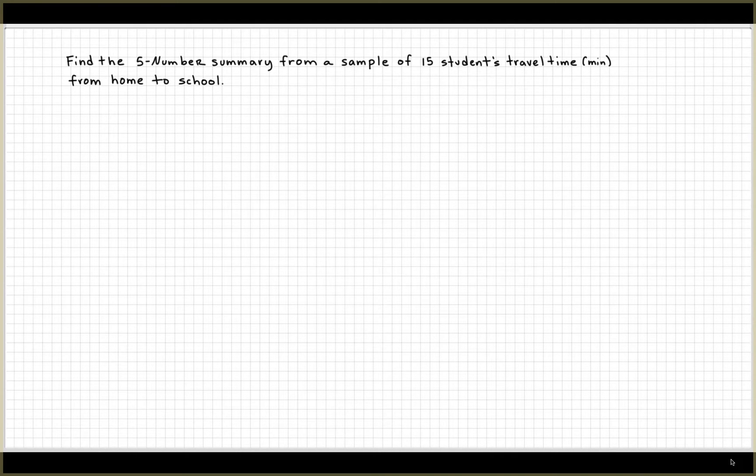Here's an example. Find the five-number summary from a sample of 15 students' travel time in minutes from home to school. So here are the data. We're going to want five-number summary: min, Q1, median, Q3, max.